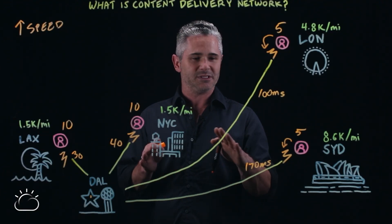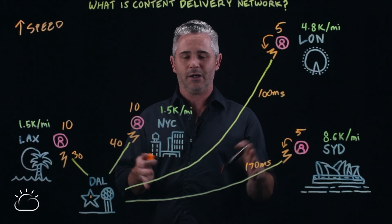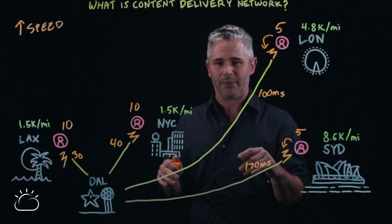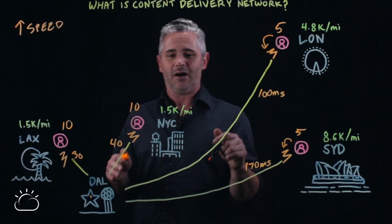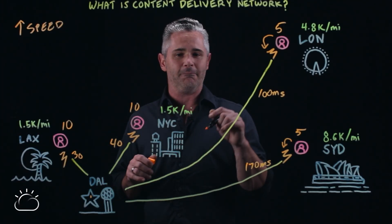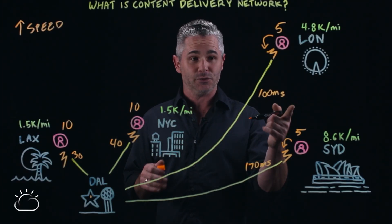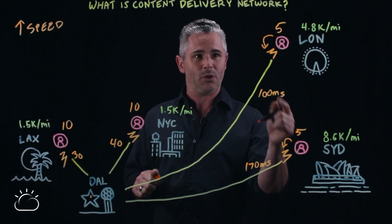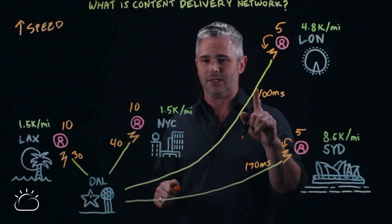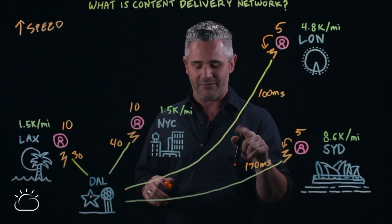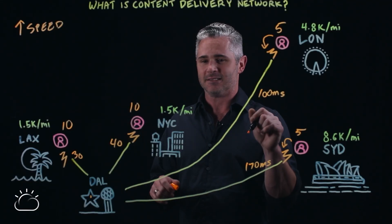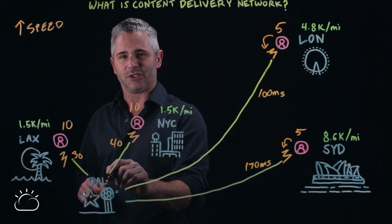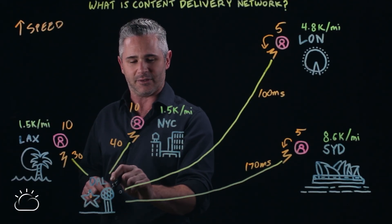As you can see, it's fairly straightforward how a CDN is able to provide benefits to the end user by reducing the amount of time it takes to deliver the service. But what you're not seeing here is an indirect benefit: the reduction in the amount of traffic that actually hits the Dallas server.